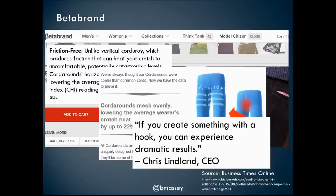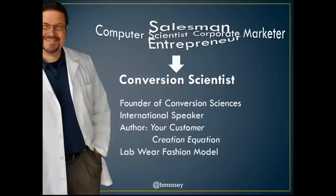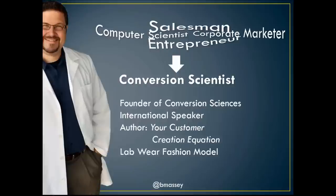I'm going to discuss some of the things that are in the way of our copy and why a company like Beta Brand can have such explosive growth with otherwise mundane products. A little bit about me: I founded Conversion Sciences. I'm a computer scientist by training, did technical sales at Texas Instruments, ran my own company in the 90s, and was a corporate marketer through the 2000s after the dot-com crash. When you pull all this together, there's really nothing else you could be than a conversion scientist.